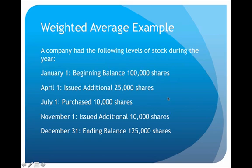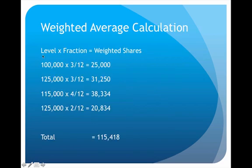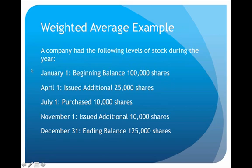That's a more complex example because the amount of stock is fluctuating throughout the year, so we would have to use this information to calculate a weighted average. To set up the calculation, we'll look at different levels of stock. For each level, I'm going to multiply it by a fraction representing a certain number of months out of 12 months. That will give the weighted shares for each particular period, and then I can add all those weighted shares together to get the total weighted average.